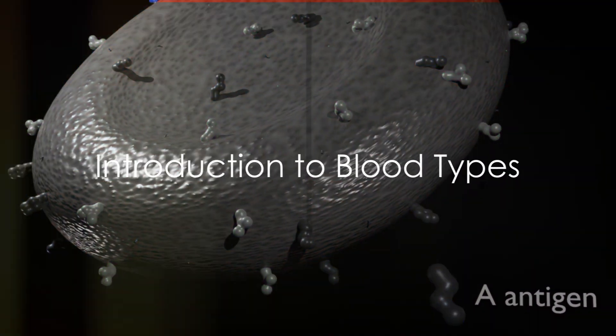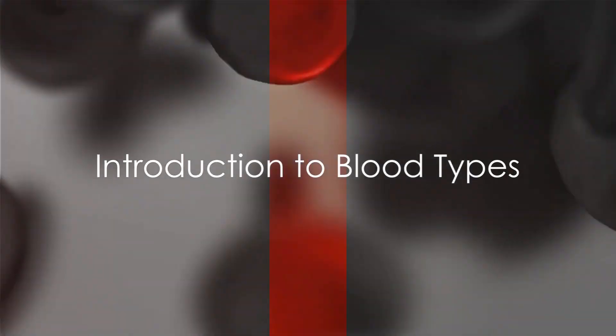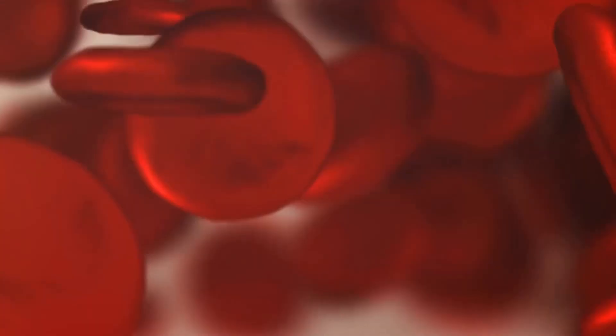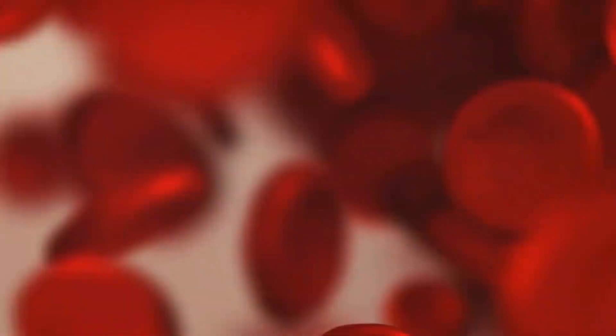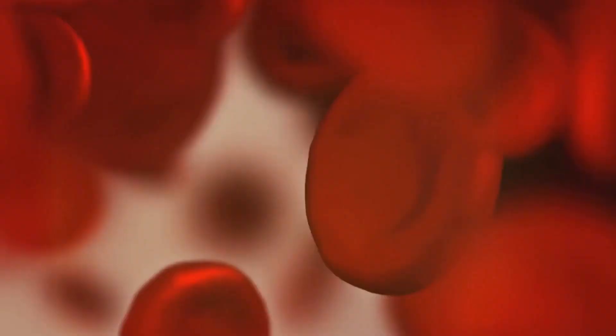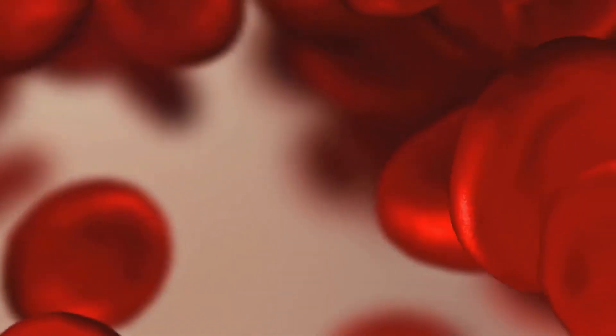There are four main blood types in humans: A, B, AB, and O. Each blood type is determined by the presence or absence of certain antigens on the surface of red blood cells.